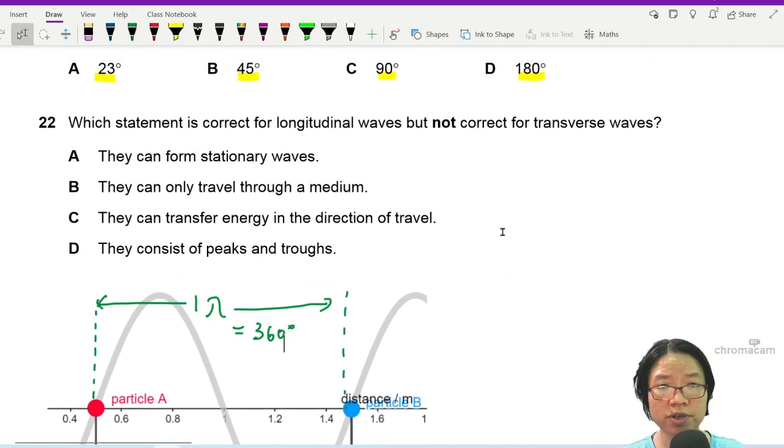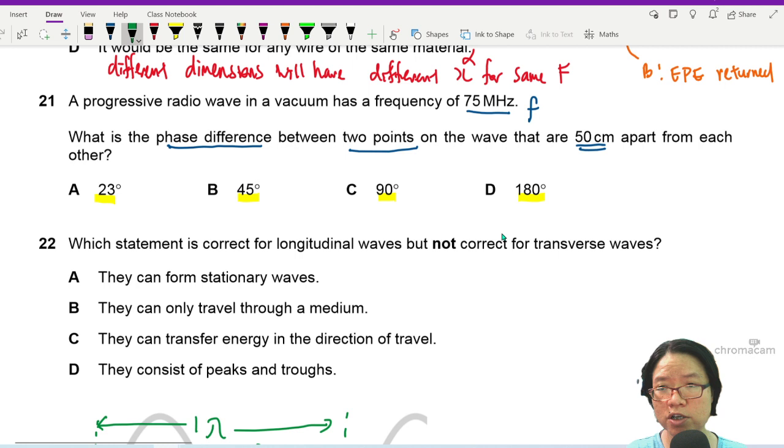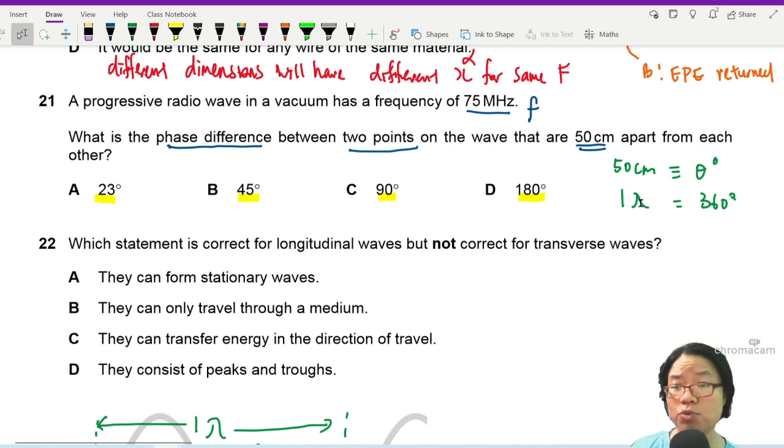In this question, it says that this separation, so 50 cm is equivalent to theta degrees. We are trying to find theta. But what is 1 lambda? Because 1 lambda is 360. So the first step is to find the value of wavelength. You have the idea that there's a relationship between wavelength and angle. One complete cycle represented by one wavelength is 360 degrees.